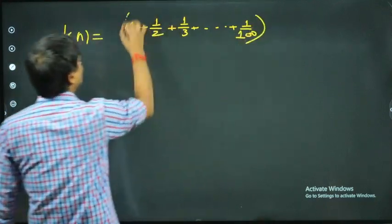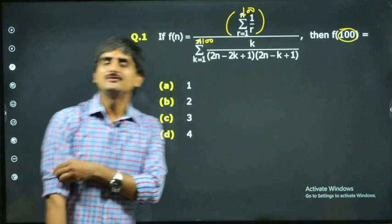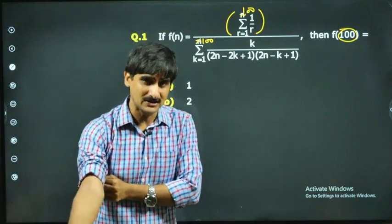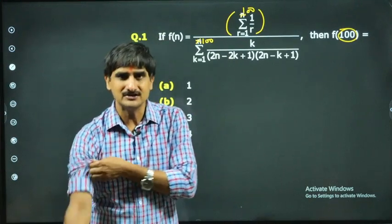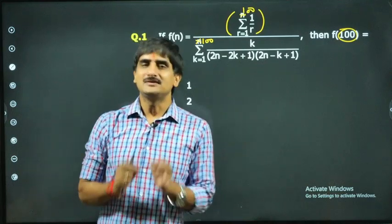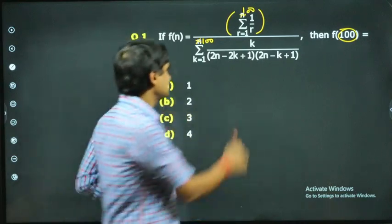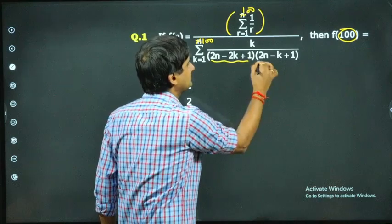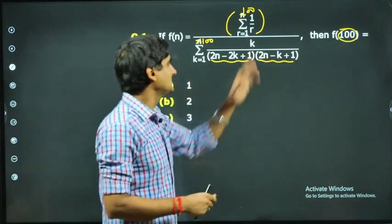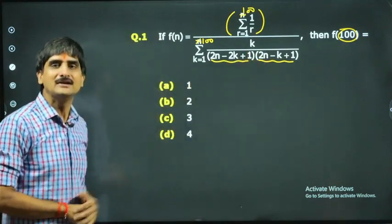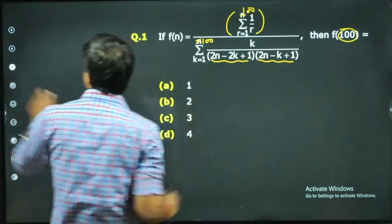For the denominator, we have a method: if we can rewrite the general term of a series as a difference of two consecutive terms, it makes things simplest and easiest. We can see that here — these are two consecutive terms in terms of k: (2n - 2k) and (2n - k), where k is the variable.